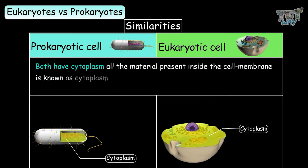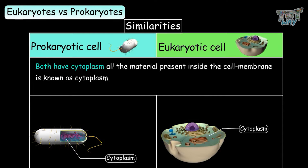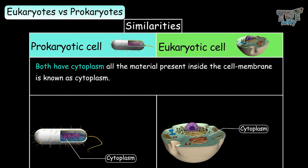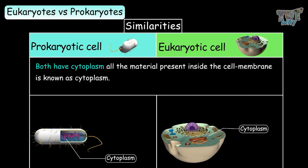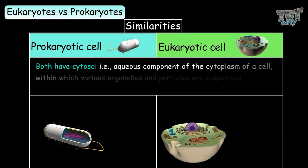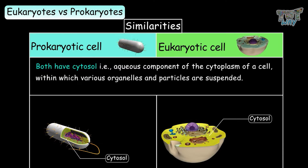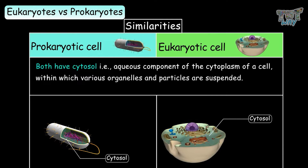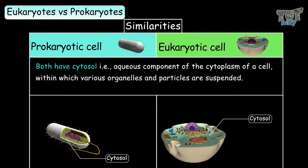Both have cytoplasm. All the material present inside of the cell membrane is known as cytoplasm, but the nucleus is not considered as a part of the cytoplasm. Both have cytosol, which is the aqueous component of the cytoplasm within which all other parts of the cell are suspended.